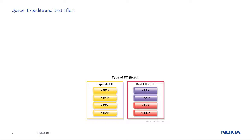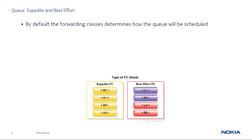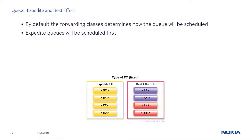As mentioned earlier, as traffic is classified on ingress it can be assigned to one of eight forwarding classes, which then place packets into queues. More than one forwarding class can be mapped to one queue. By default, forwarding classes determine how the queue will be scheduled. Forwarding classes are placed into two groups: expedite and best effort. Expedited forwarding classes are NC, H1, EF, and H2. Non-expedited or best effort forwarding classes are L1, AF, L2, and BE.